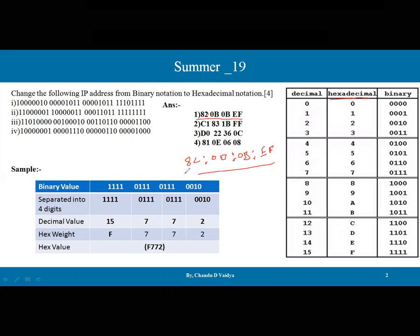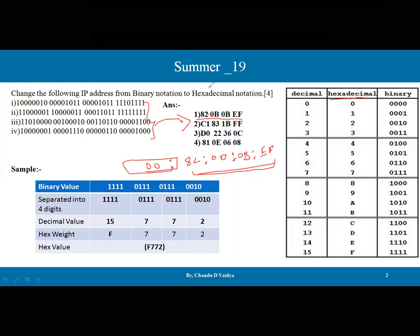If they ask to extend into four hexadecimal groups, we can add leading zeros such as 00 where needed. This is the simple solution for converting binary numbers to hexadecimal values. Thank you so much, I hope you understand.